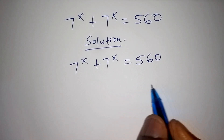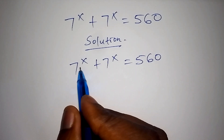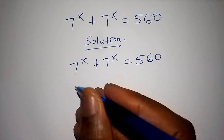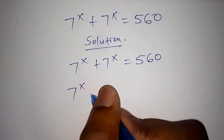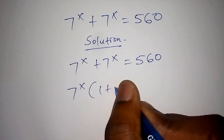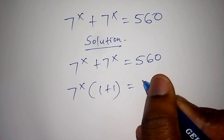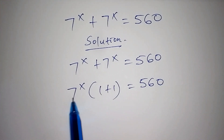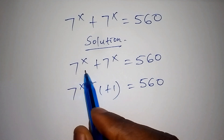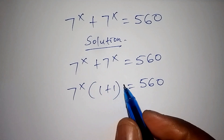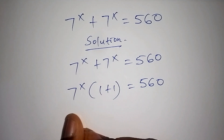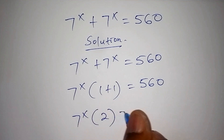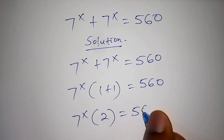The first thing we need to do is factorize 7 to the power of x plus 7 to the power of x. We have the same base, so we shall have 7 to the power of x into 1 plus 1, which is equals to 560. When you open the bracket, it still leads us to 7 to the power of x plus 7 to the power of x. So 1 plus 1 becomes 2, and 7 to the power of x times 2 is equals to 560.